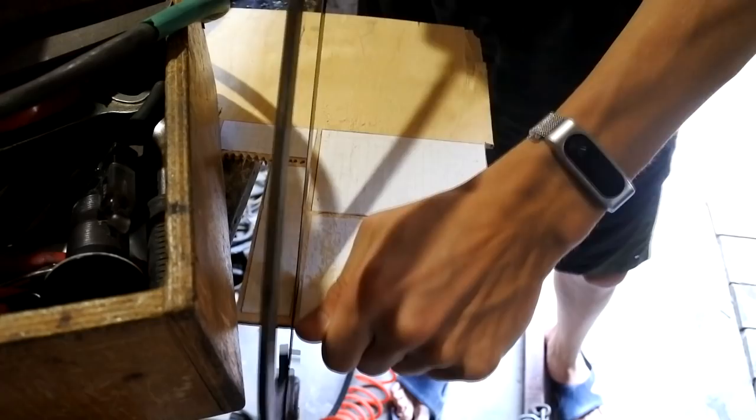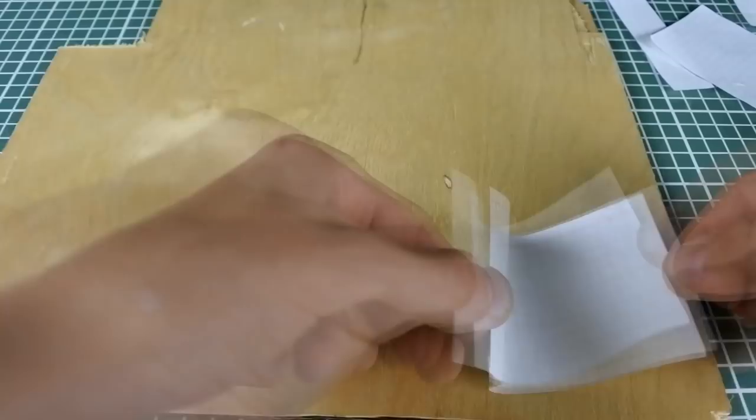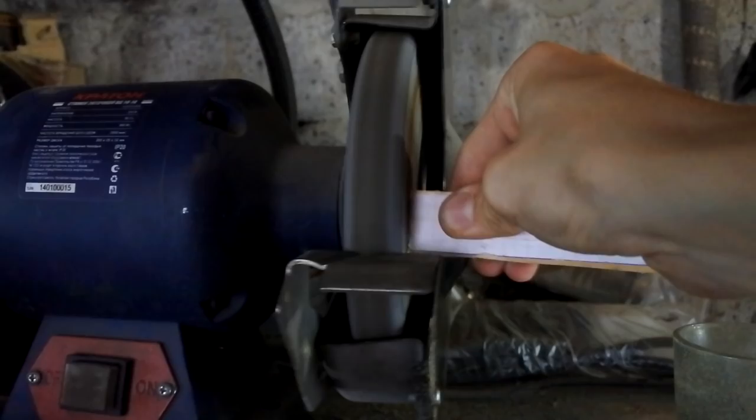Next step I cut it out from a paper using a scissor. I want to make this box from 3mm plywood. Glue paper on wood and cut it with saw.